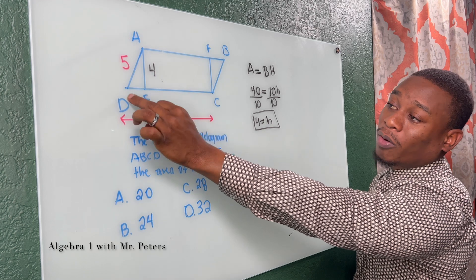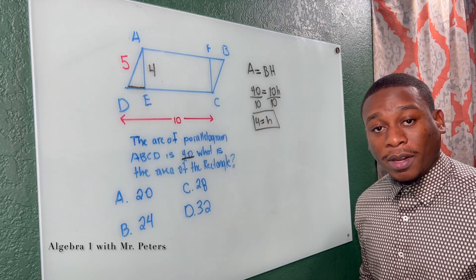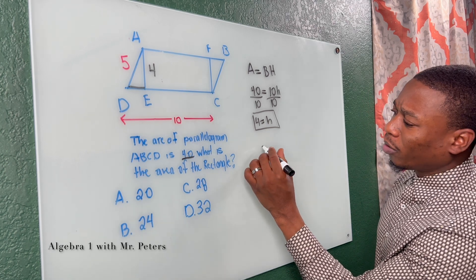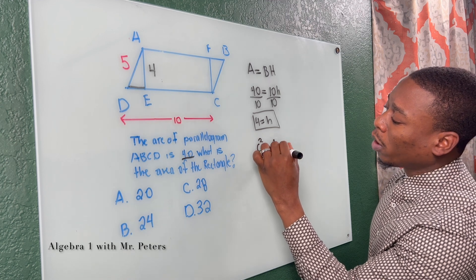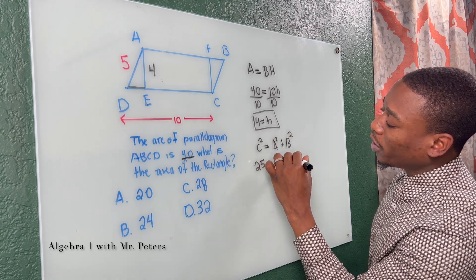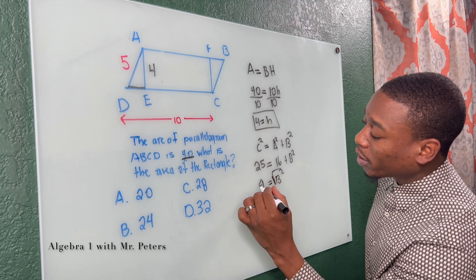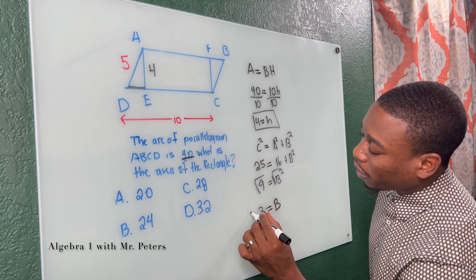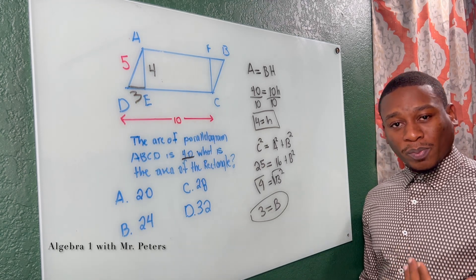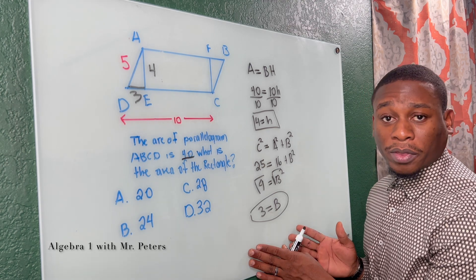Now that we know the height is 4, we can find the base of the triangle on the side. We know the whole distance is 10, but we need to find the shorter horizontal distance to find the area of the rectangle. Using the Pythagorean theorem: c squared equals a squared plus b squared, so 25 equals 16 plus b squared, giving 9 equals b squared, so b equals 3. Or you can just recall the 3-4-5 special triangle relationship.